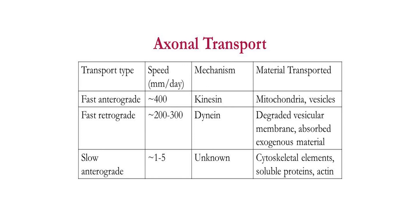In summary, axonal transport has two types — fast and slow — differing in velocity. Fast transport is bidirectional: anterograde transport moves from soma toward the axon terminal via kinesin, replenishing synaptic vesicles and enzymes for neurotransmitter synthesis; retrograde transport in the reverse direction is mediated by dynein and returns recycled synaptic vesicle membrane to the soma for lysosomal degradation. The slower anterograde transport, whose mechanism is not fully clear, carries cytoskeletal elements, soluble proteins, and actin.